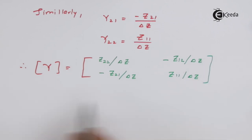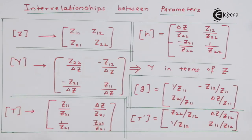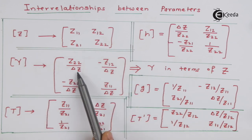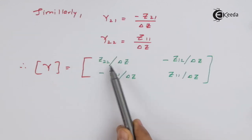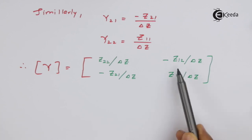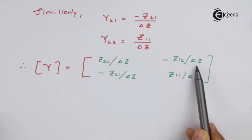So this is the Y parameter that we have obtained. And now we will check this. This is the very first page which I have shown to you. At the start, I explained this page and told you that we will derive this. So it is Z22 upon delta Z, then minus Z12 upon delta Z. Here also Z22 upon delta Z minus Z12 upon delta Z.